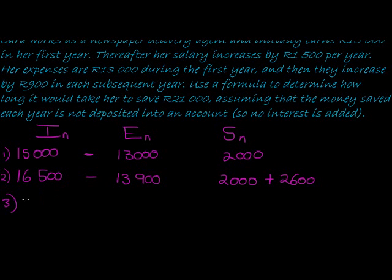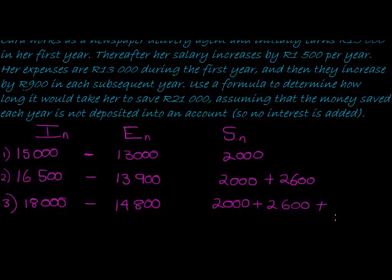She'll be earning another R1,500 so now she'll be earning R18,000 minus this will increase again with R900 so it's R14,800. And now how much is in her savings account? Well, there should be the R2,000 that she had in the first year plus the R2,600 in the second year plus how much is she saving now? R3,200.